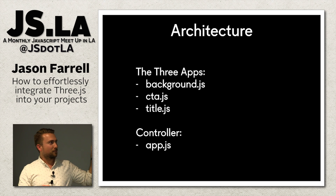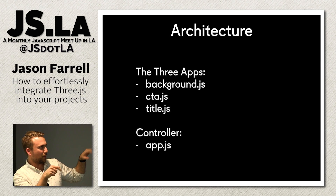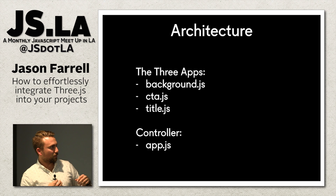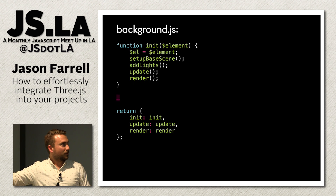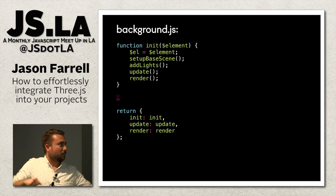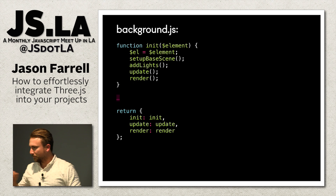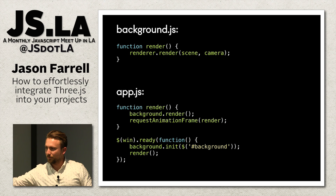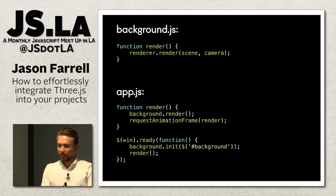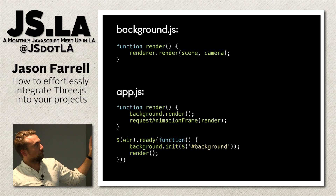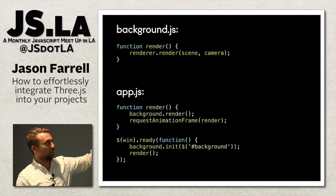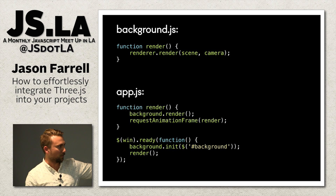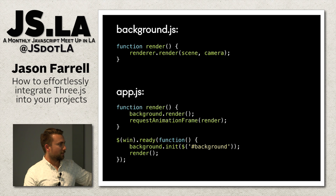Here's how the scene is set up. Throughout this talk I'm going to reference three different apps: background, CTA, and a title — and everything's controlled in app.js at the end. We're going to start with this background. We set it up, add some lights, set the scene up, and render it. We return a simple API with update and render, which we'll use later on. On background.js, we create a render that takes the scene and the camera, puts it together, and renders it. App.js controls it, calling that render, because we're going to have a bunch of apps. Once everything's ready, we send in the background element and render it.